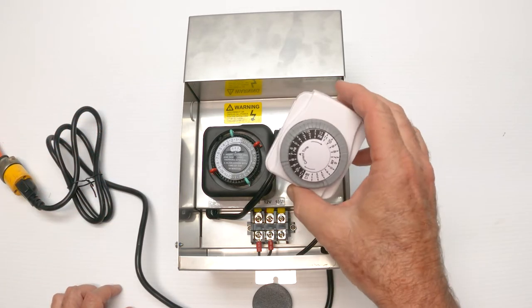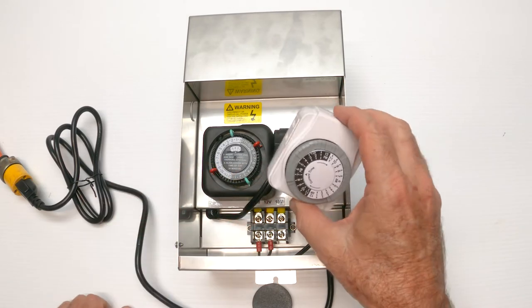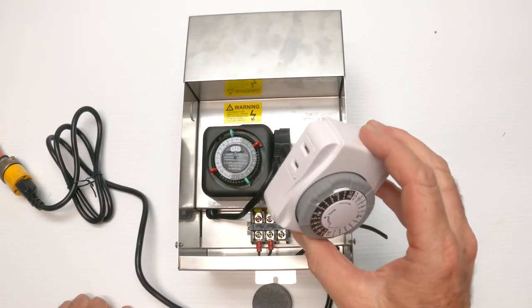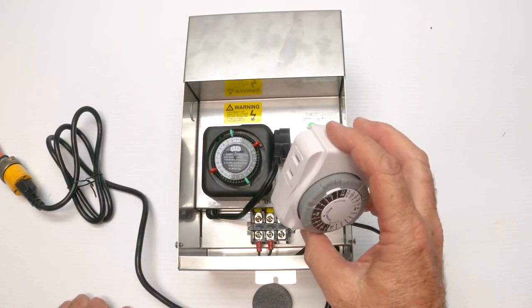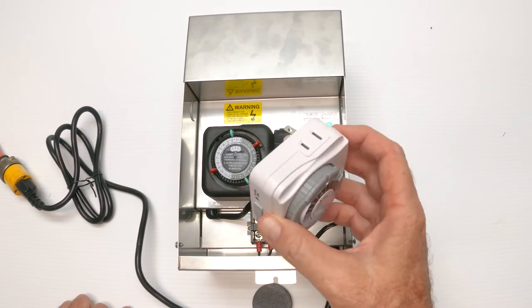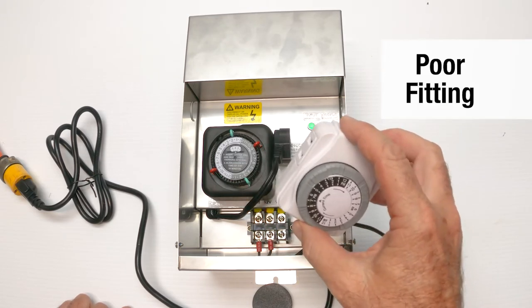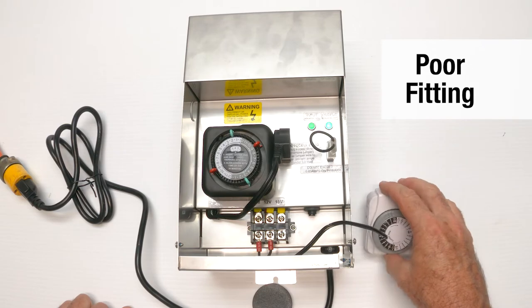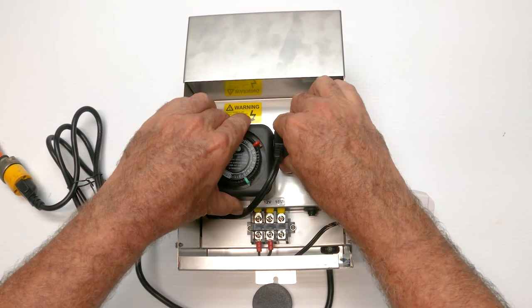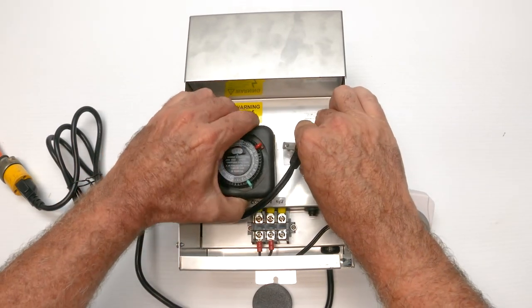We found this timer at Home Depot. Actually we found them both there. It was for six dollars. The problem with some of the less expensive low-end no-name timers is they don't fit well in the transformer. They end up crowding things in. If you notice